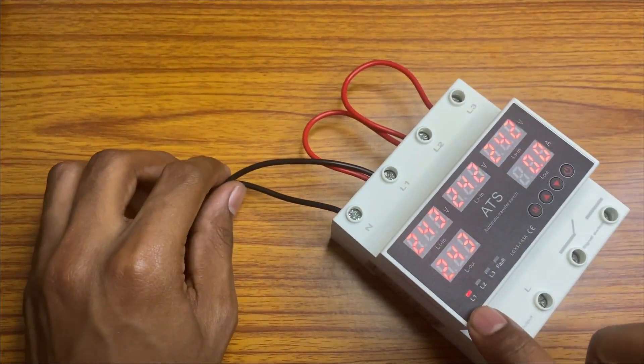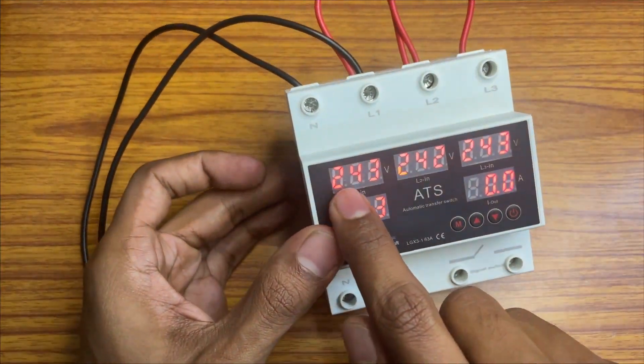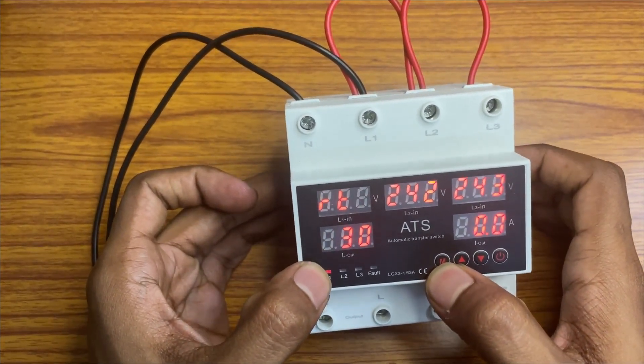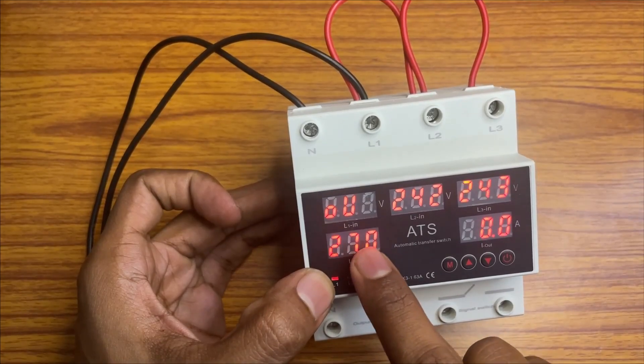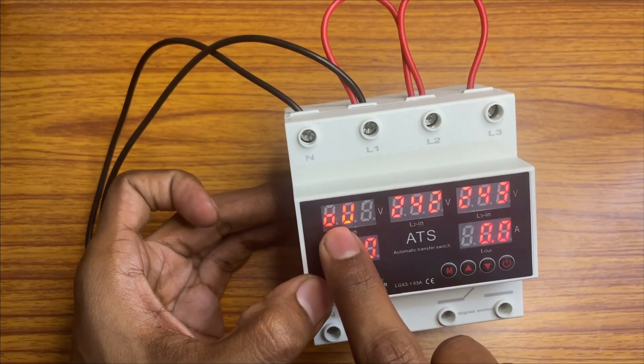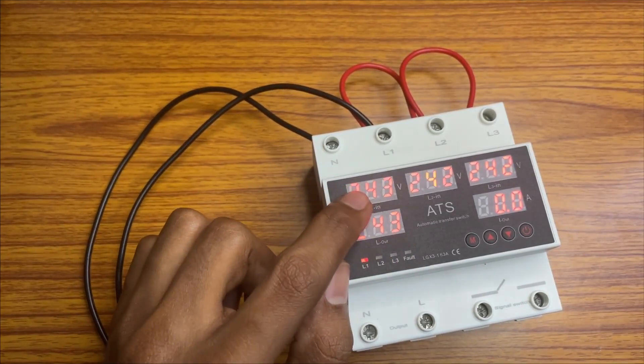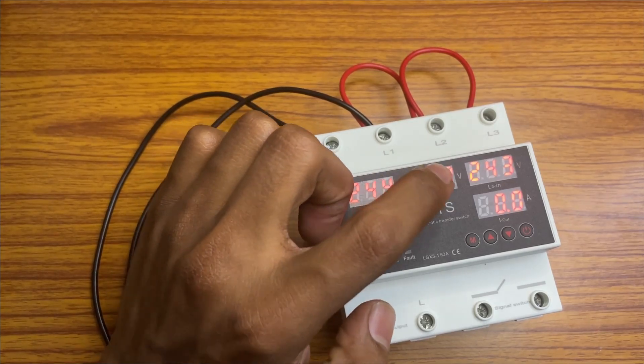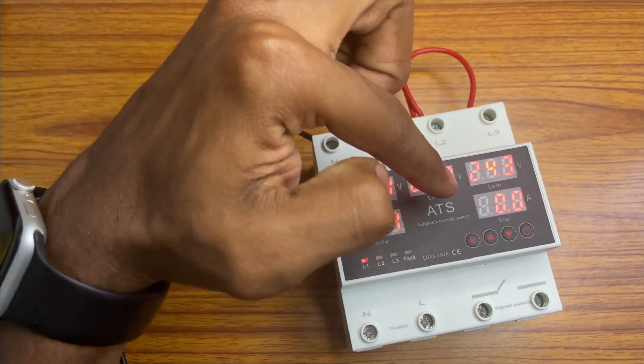Now it is giving the output from L1 as you can observe. Here we have set the voltage. If you press the M button: power delay time, reset delay time, over voltage. Over voltage 270 - if 270 in any one of the phase is coming, like for example L1 270, it will detect this is over voltage and it will jump back and give output from second phase. In that second phase it will show L2. For example if there is no line for L2.